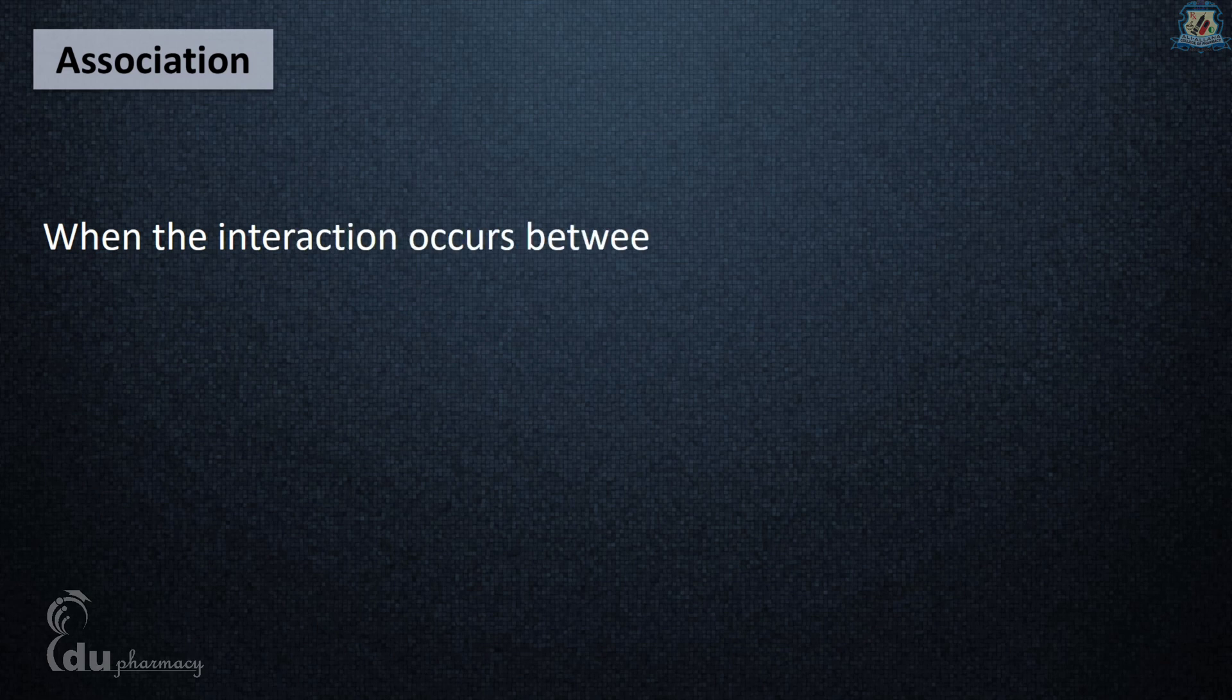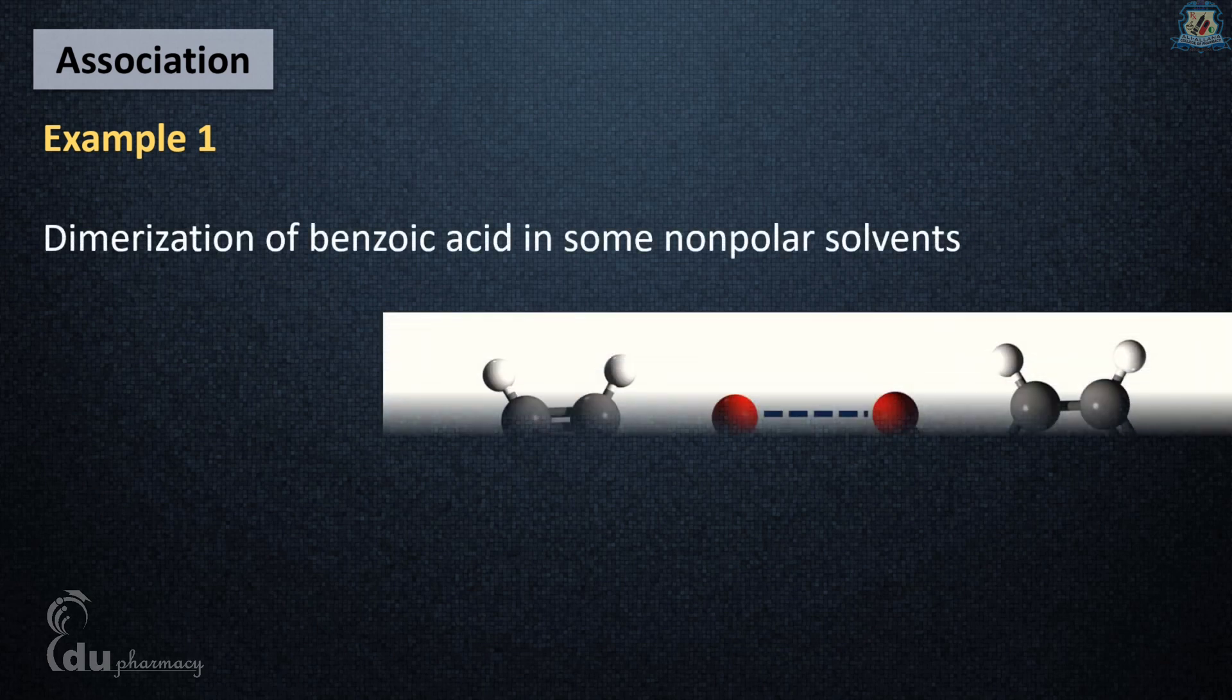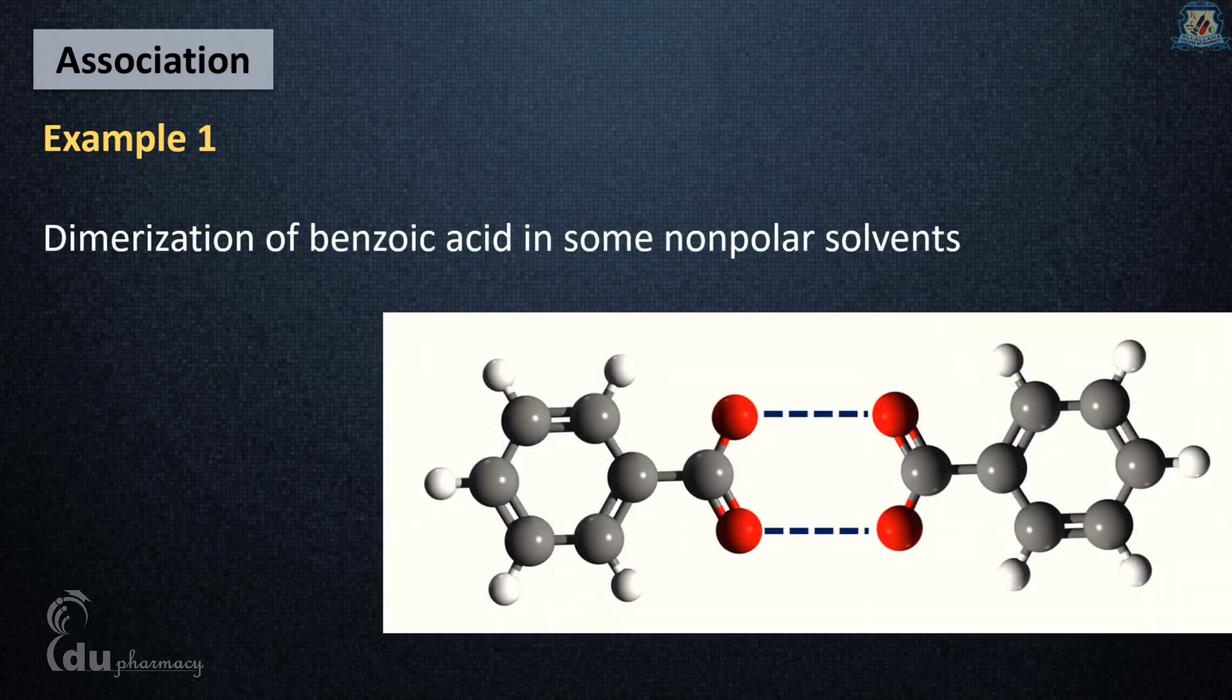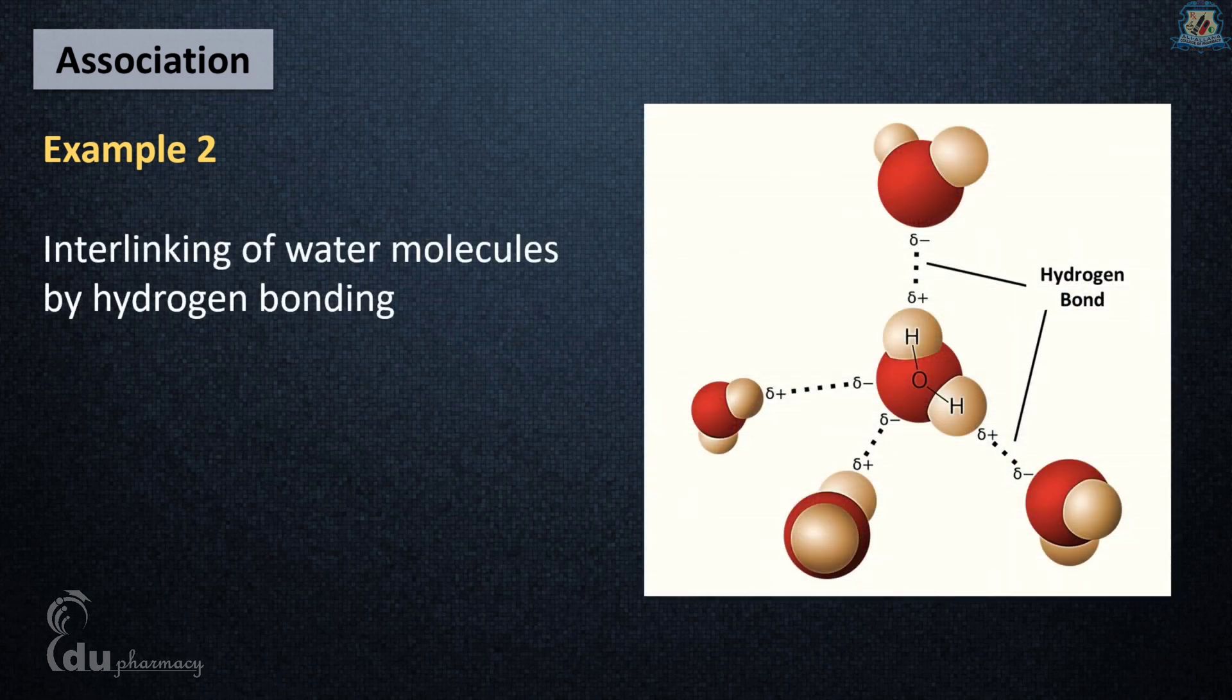Association: when interaction occurs between like molecules of one component in a solution, the phenomenon is referred to as association. For example, dimerization of benzoic acid in non-polar solvent like benzene, or interlinking of water molecules by hydrogen bonding.